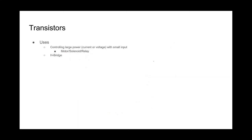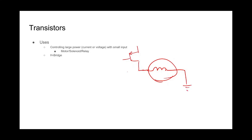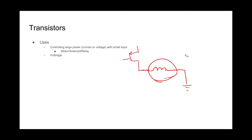Another great example is an H-bridge. If you have a motor and you put a single transistor in the circuit — say a p-type — with a flyback diode, this works great for spinning in one direction. The only problem is what if we want to spin the motor in the opposite direction? To get around that, we use a series of MOSFETs going in opposite directions relative to each other.